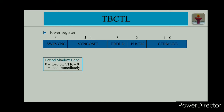If period load is disabled by writing 1, all write instructions to TBPRD will directly change the period register. If enabled by writing 0, a write instruction stores a new value in the shadow register, and when the next counter equals 0, the shadow value is automatically loaded into TBPRD.